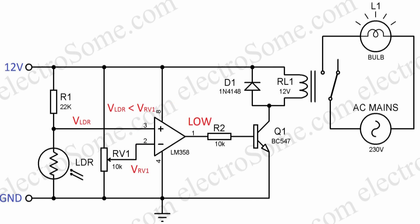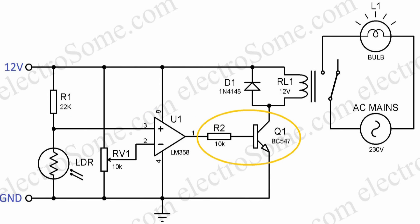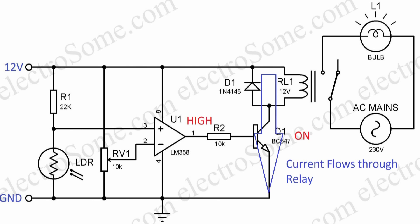When the LDR voltage is less than the RV1 reference voltage, the output of the comparator is low. And when the LDR voltage becomes greater, the output of the comparator becomes high. Transistor Q1 is wired as a switch with base resistor R2. The transistor will be in off-state when the output of the comparator is low. When the output of the comparator becomes high, the transistor turns on and current flows through it.